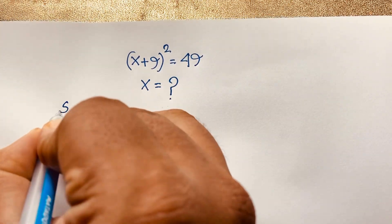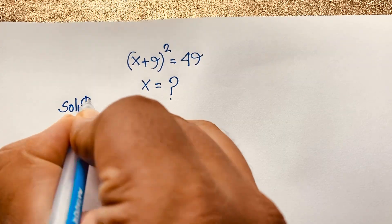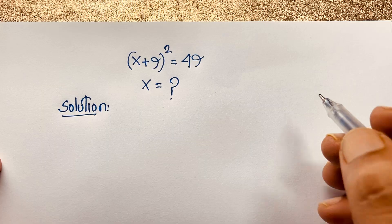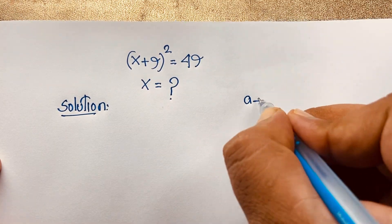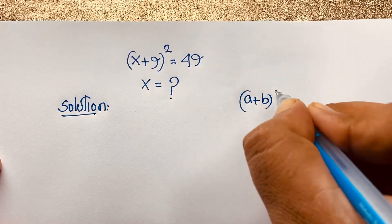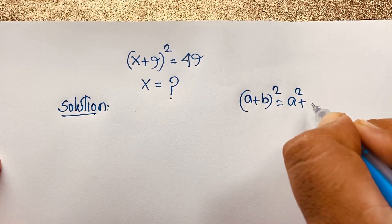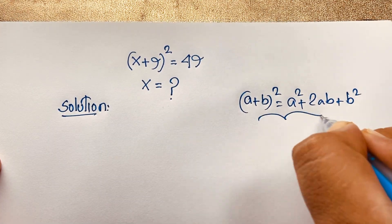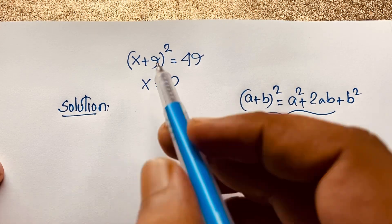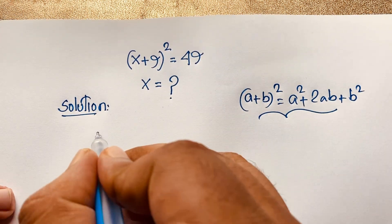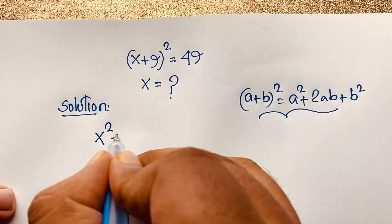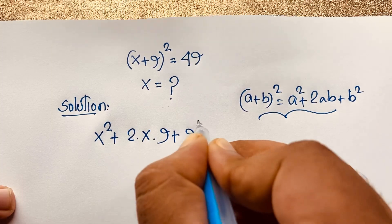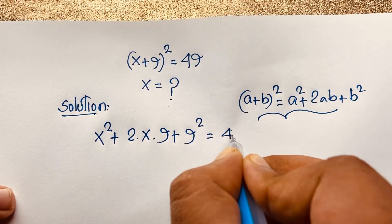So our math solution. Here, x plus 9 whole to the power of 2. We know that (a + b) whole to the power of 2 equals a squared plus 2ab plus b squared. So if I apply this formula here, this expression (a + b)² will be a squared plus 2ab plus b squared, where b is 9, and 9 squared is equal to 49.